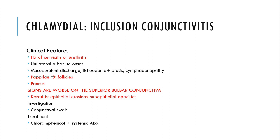It usually has a unilateral subacute onset with mucopurulent discharge, lid oedema, ptosis and lymphadenopathy — which are fairly non-specific clinical features. There is presence of papillae which can change into follicles, and as with trachoma there's a pannus. One differentiating sign is that the clinical features are worse on the superior bulbar conjunctiva, and there's keratitis with epithelial erosions and sub-epithelial opacities. Investigation is via conjunctival swab and treatment with chloramphenicol and systemic antibiotics for the sexually transmitted infection.